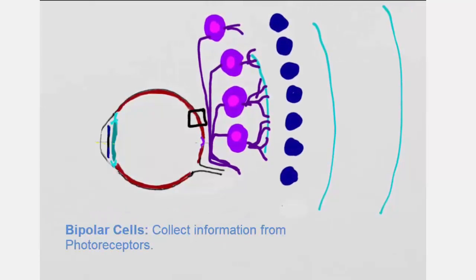Right next door live the bipolar cells, which collect information from the photoreceptors and send it on to the ganglia.